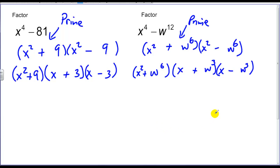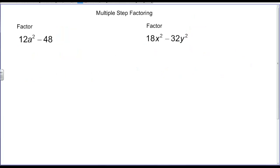Now, all the terms we're going to do today are fairly easy to see — just two terms, a difference between them, and they're both perfect squares. But as we go further and further into our factoring, it's going to be tougher and tougher to see what actually factors and what doesn't. We're going to talk multi-step factoring.